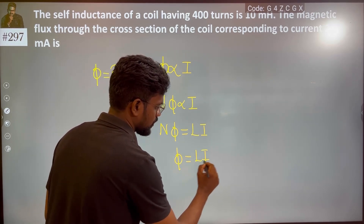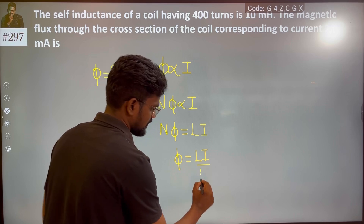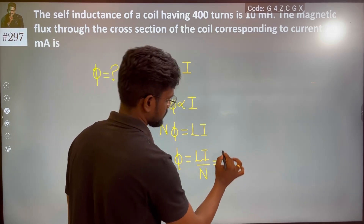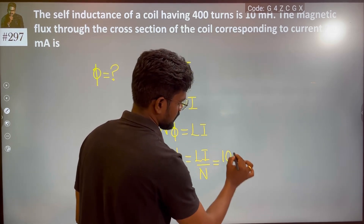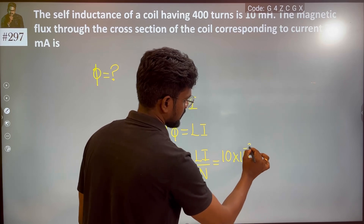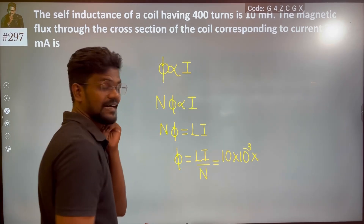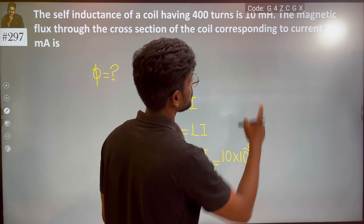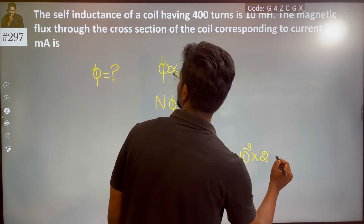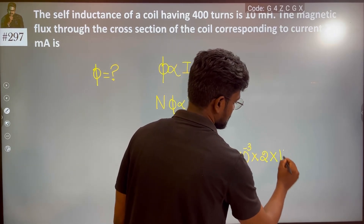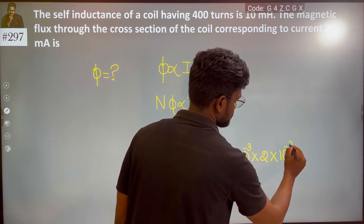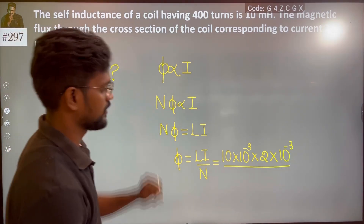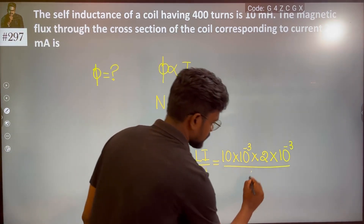Flux φ = LI / N. L is 10 millihenry, which is 10 × 10⁻³. And I is the current, which is 2 milliampere, 2 × 10⁻³. Divided by number of turns: 400.